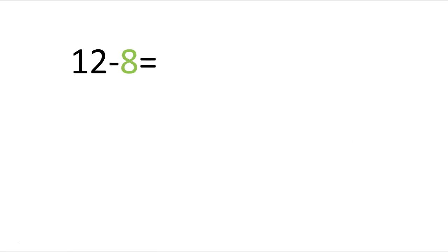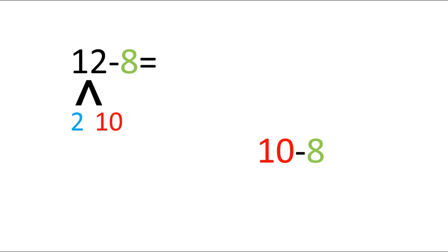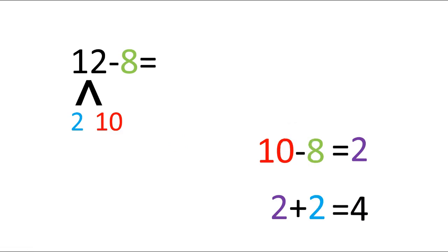Let's see if you can do this. I want you to push pause and then push play. I want you to break up the 12 — that's what you're going to do first. Push pause and then push play when you're done. So when you broke up the 12, did it look like this? Did you take out the 2 and have 10 left? Very good. Now go ahead and write your first number sentence. Is this what your first number sentence looked like? 10 minus 8. What did you say 10 minus 8 equals? Did you say 2? If you did, give yourself a kiss on the brain. Now go ahead and write your next number sentence. Did you write 2 plus 2? What did you say 2 plus 2 equaled? Did you say 4? If you did, give yourself a kiss on the brain. Excellent job. So 12 minus 8 equals 4.